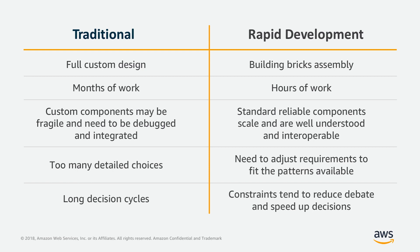If I compare the traditional way with rapid development, we're moving from a full custom design to something built out of pre-assembled bricks — moving from months of work to hours of work. The custom components in the traditional design might be fragile, might need to be debugged and integrated, and it takes a while to be sure everything fits together. Whereas with LEGO bricks, we know they fit together — it's quick to plug them together and they have very standard interfaces. We're moving from a world with too many choices, where you can spend a lot of time discussing how it should be done, to something where you fit the requirements to the patterns available. These constraints reduce debate and speed up decision making — a big piece of rapid development is that extra constraints actually speed things up.